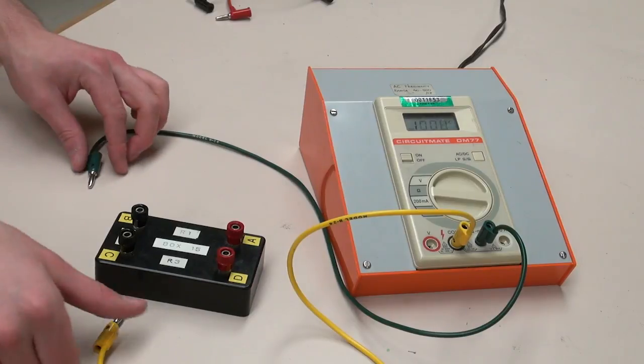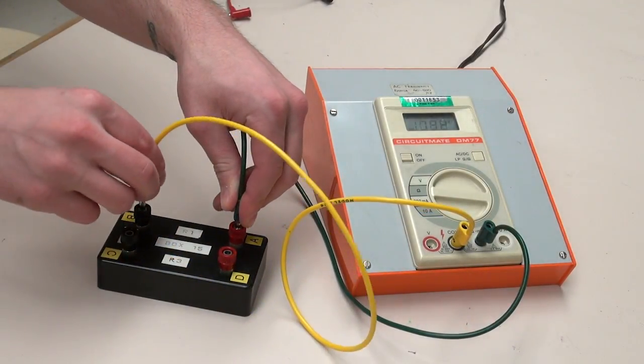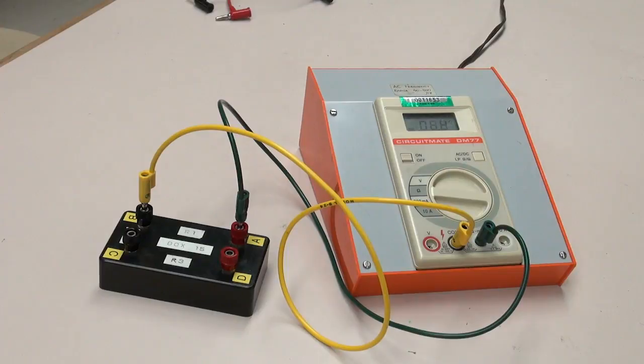To properly measure resistance, the only items that can be in the circuit are the components to be measured and the resistance meter, and nothing else.